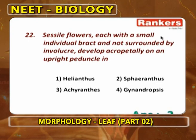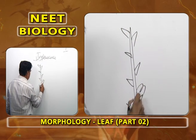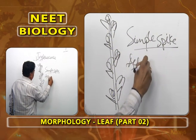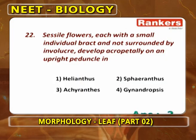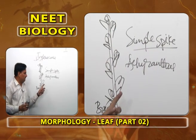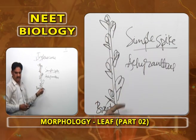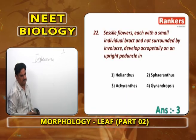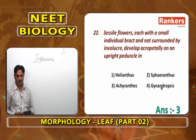Sessile flowers, each with a small individual bract, not surrounded by involucre, developing acropetally on an upright straight peduncle — this describes simple spike. Simple spike is found in Achyranthes and Amaranthus. The remaining options are wrong: Helianthus is a heterogamous head, Spiranthes is a compound head, Gynandropsis is a simple corymb. So the answer is Achyranthes and Amaranthus.